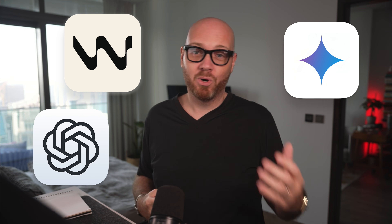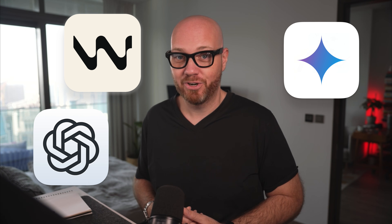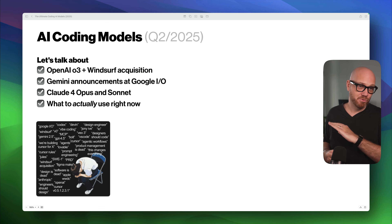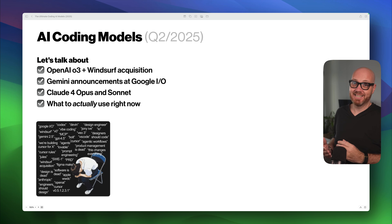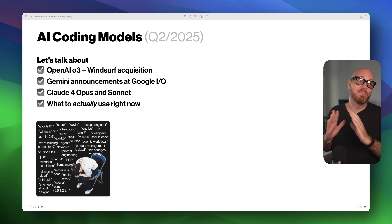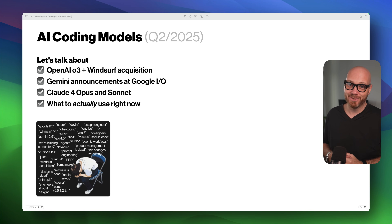We have been drowning in AI model updates recently. OpenAI bought Windsurf, Google dropped new models at their annual developer conference, Claude finally went from version 3.7 to version 4. But here's the thing — you're still stuck not knowing which one to actually use. In this video, I'll cut through all the noise, showing you exactly what actually matters for building real apps, because I have researched and tested all of this for hours — and here is what most AI influencers really don't want you to know.